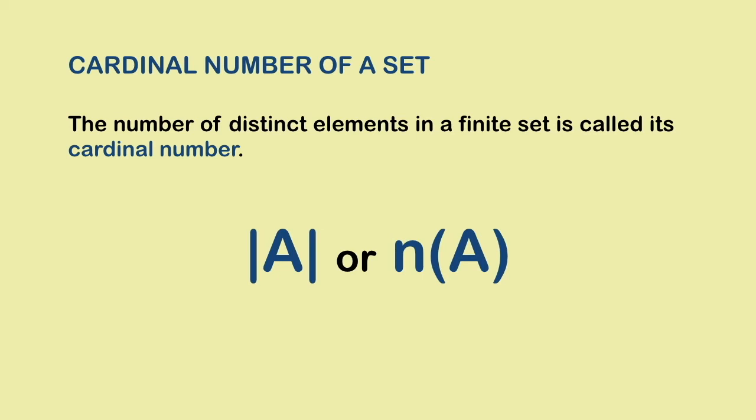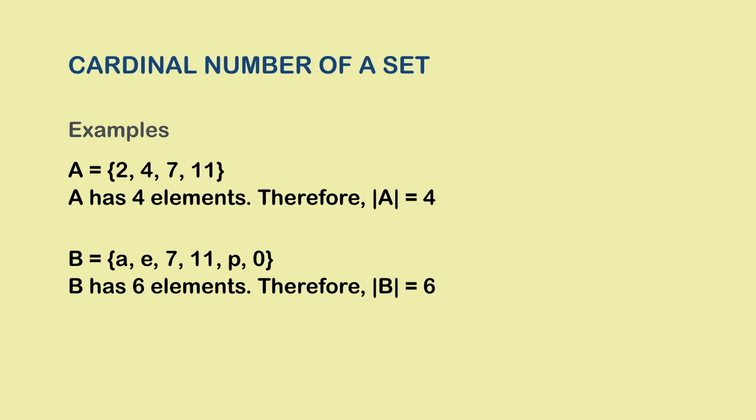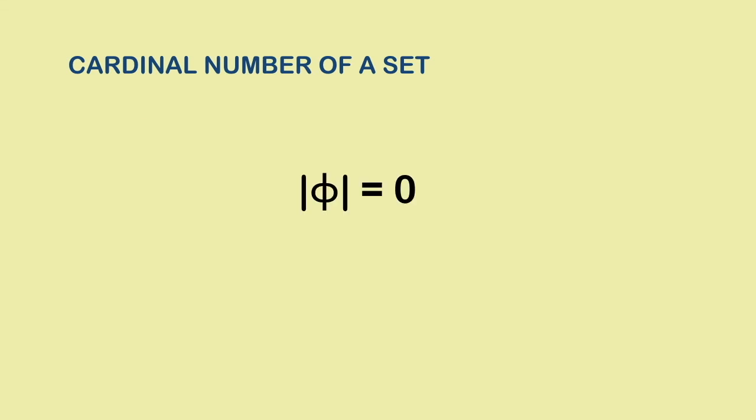It is a very easy and simple concept. Here you can see in the examples, A has 4 elements and so the cardinal number of the set A is 4. B has 6 elements and so its cardinal number is 6. Cardinality of the empty set is 0. Cardinal numbers are defined only for finite sets, because in an infinite set the number of elements is indefinite.